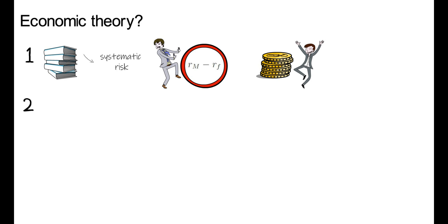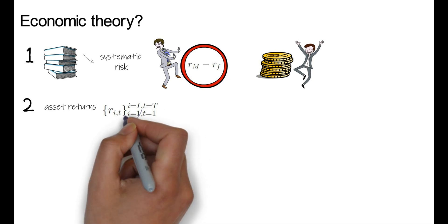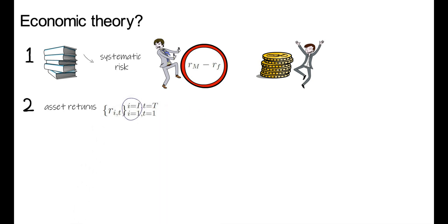Step 2: Now you have to collect a panel of asset returns. I write that as RIT, I goes from 1 to cap I, so that is the cross section, and then T goes from 1 to capital T, that is the time series.